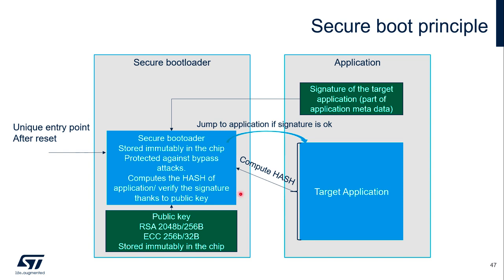One main responsibility of the secure boot loader code is to compute the digest of the target application and verify its signature using the public key, which is stored in the same secure boot loader area. The signature of the target application will be attached to the binary of the target application as part of its metadata. The secure boot loader will jump to the application only if the signature verification is successful.